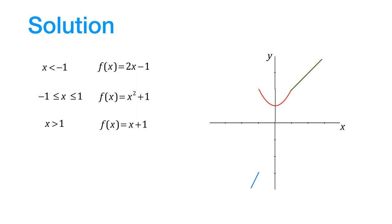Let us also now mark some important points. We have minus 1 comma minus 3. We also have minus 1 comma 2, which lies on the graph, and we also have 1 comma 2, which also lies on the graph.